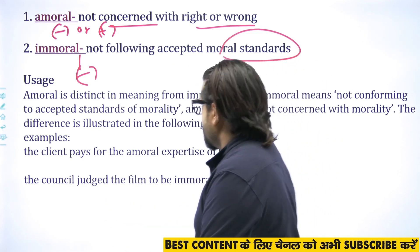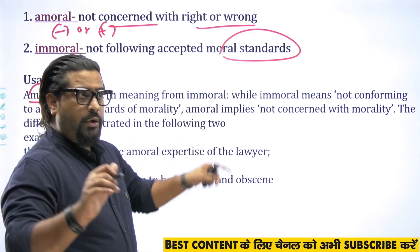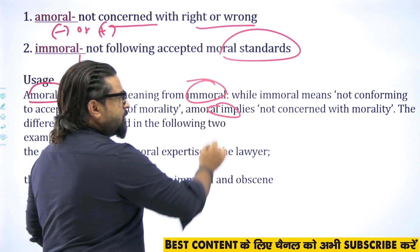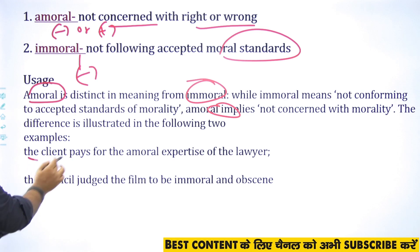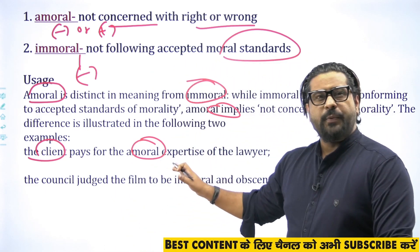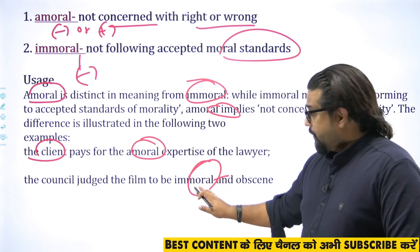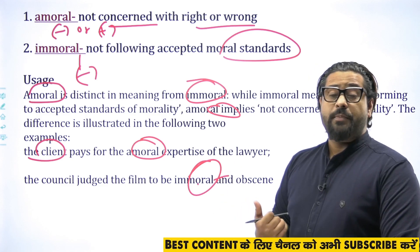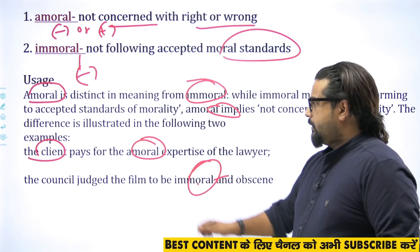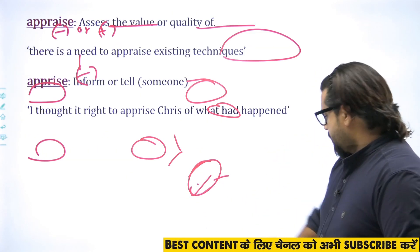'Immoral' means a person who willingly and knowingly does something wrong — not following accepted moral standards. 'Amoral' is distinct from 'immoral': immoral means not conforming to accepted standards of morality or society's rules, and you are aware of those rules but choose not to follow them. 'Amoral' implies simply not being concerned with morality. Example: 'The judge found the film to be immoral and obscene' — there is a standard for cinema in society, and the film is not following those rules, hence immoral.